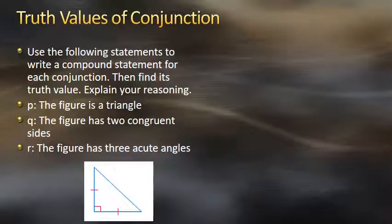We're in Chapter 2-2, Logic. In this chapter, we're looking at statements and the truth value of a statement. A statement's truth value is either going to be true or false. We talk about negation of a statement — this is the opposite meaning or has the opposite truth value. We also talk about compound statements, and within compound statements, we see conjunctions and disjunctions. A conjunction is an 'and' statement, and a disjunction is an 'or' statement.